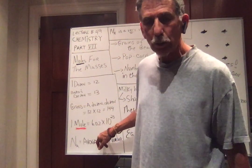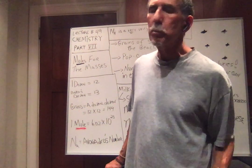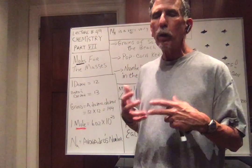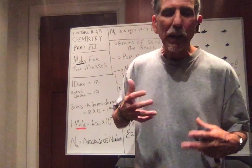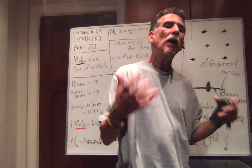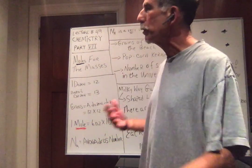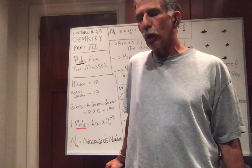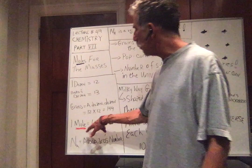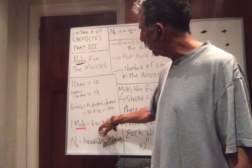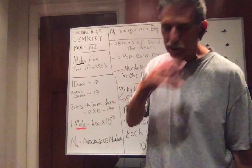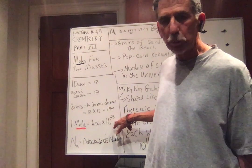Now we're going to talk about a mole. A mole is just going to be a number, but it's a very big number. Most people don't realize what an absolutely humongous, amazingly big, incomprehensibly big number a mole is. A mole of anything is 6.02 times 10 to the 23rd. For our class, we're just going to use 6, but I'll say 6.02 for now — times 10 to the 23rd power. Remember, that's 23 zeros.